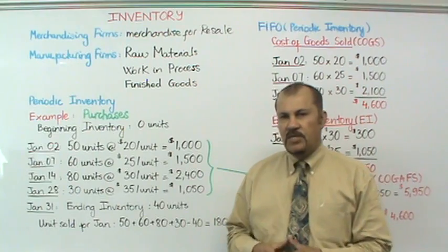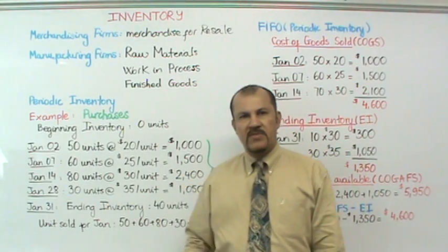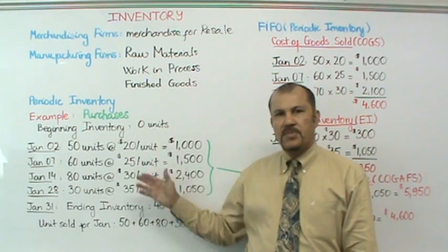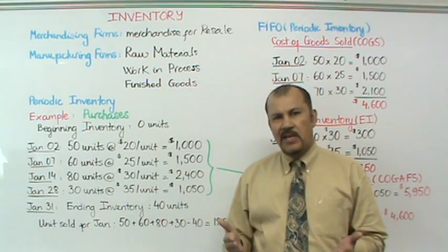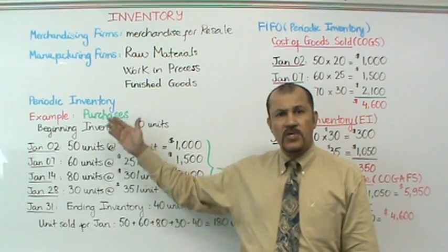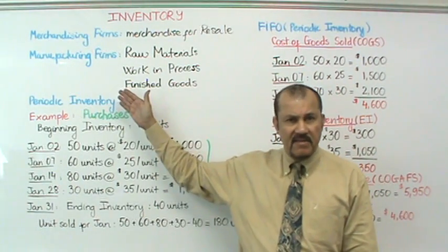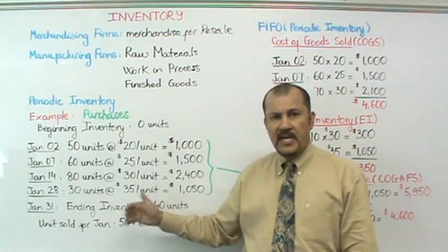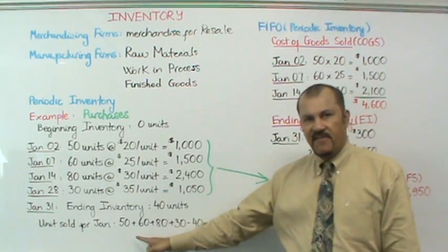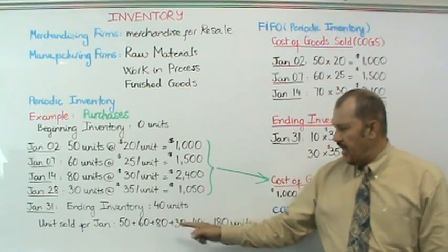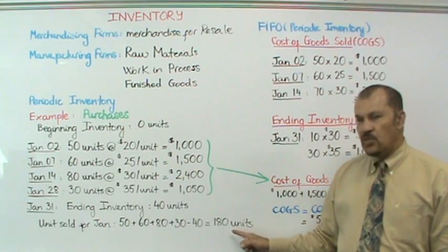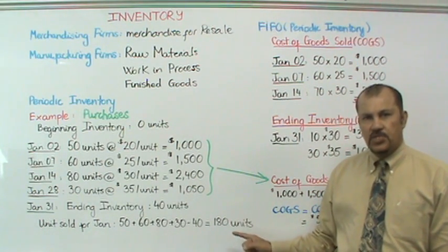In addition to this information, at the end of the month on January 31st, you are told that the ending inventory for this company is 40 units. Based on this data, we should be able to calculate how many units the company sold. We add up all of the units purchased — plus the beginning inventory, which is zero — minus the ending inventory. That's 50 plus 60 plus 80 plus 30, minus your 40 units of ending inventory, giving you a total of 180 units sold.